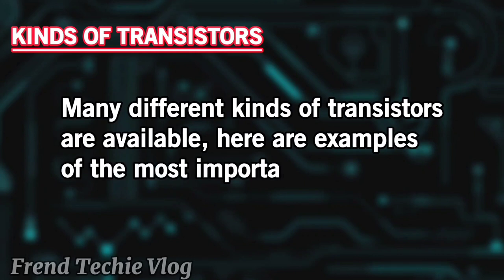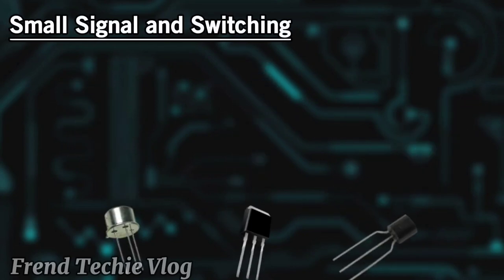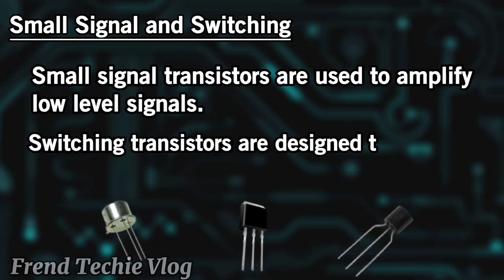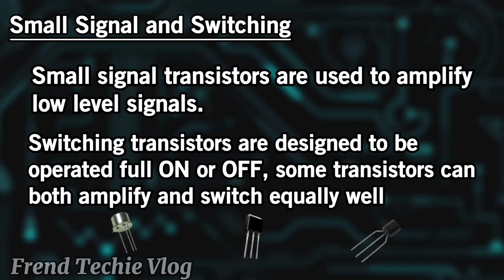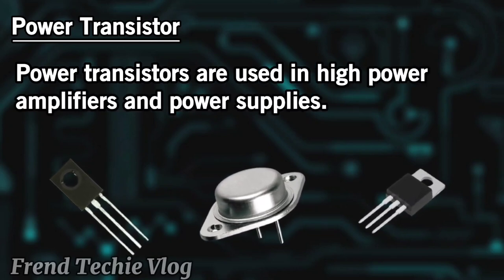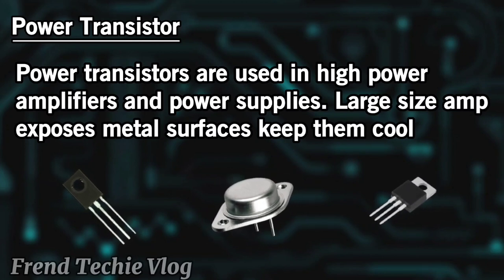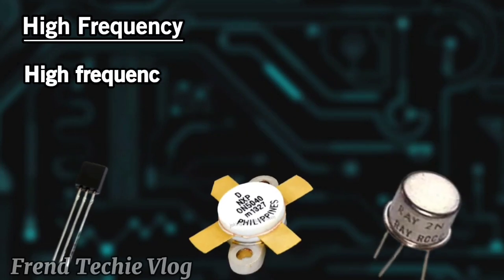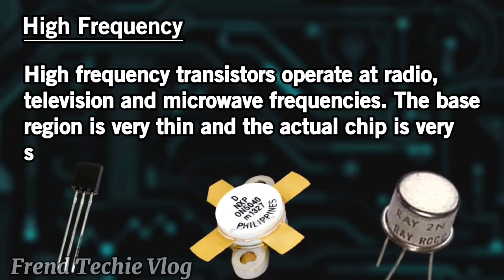Many different kinds of transistors are available. Small signal transistors are used to amplify low-level signals. Switching transistors are designed to be operated fully on or off; some transistors can both amplify and switch equally well. Power transistors are used in high-power amplifiers and power supplies; their large metal surfaces keep them cool. High-frequency transistors operate at radio, television, and microwave frequencies — the base region is very thin and the actual chip is very small.